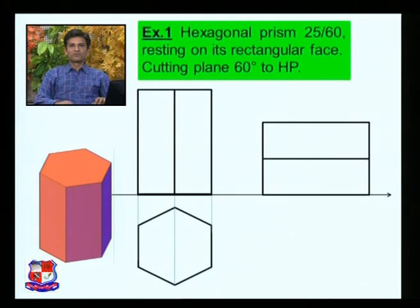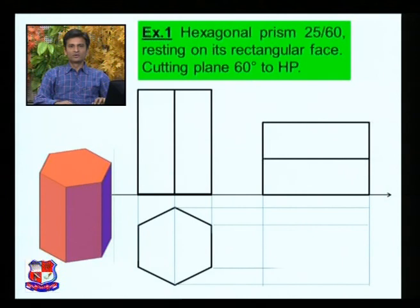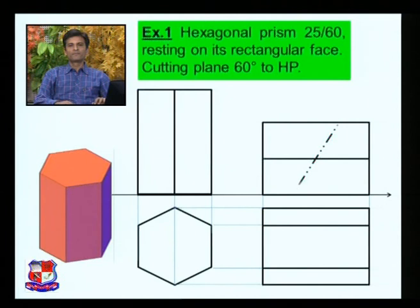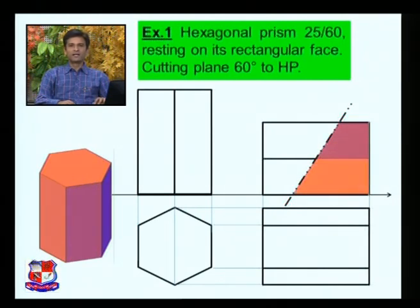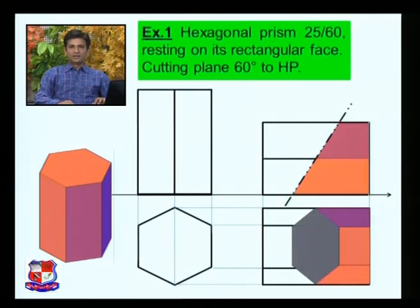Take projections from the front view and from the top view. The horizontal lines show the projections. This is the top view. The cutting plane line makes an angle of 60 degrees with the XY line and passes through the midpoint of the axis, as it bisects the axis. The remaining portion, after the upper portion is removed, becomes the sectional top view of this solid.